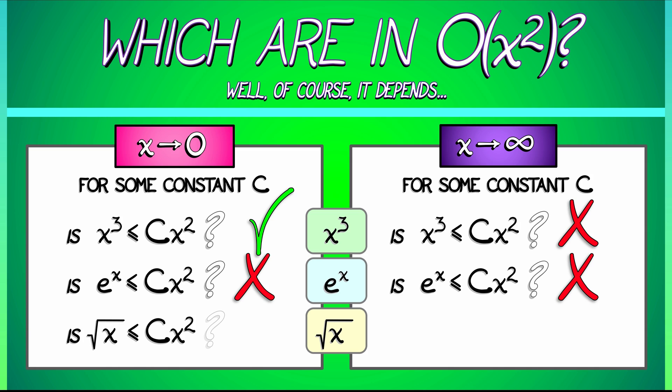Is square root of x dominated by x squared in the limit as x goes to zero? No. That square root of x, it does go to zero in the limit, but it remains really large, even for small values of x, relative to x squared. So, square root of x is not in big O of x squared as x goes to zero.